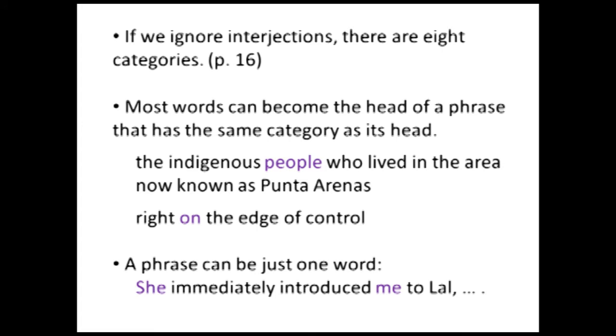'Right on the edge of control' — what kind of phrase is that? It's all about the word 'on.' 'Right' is modifying 'on,' and 'the edge of control' is complementing 'on.' 'On' is a preposition, so this is a prepositional phrase. There are a couple of categories that don't actually become phrases — for example, subordinator: you don't have a subordinator phrase. But most of them can make a phrase.